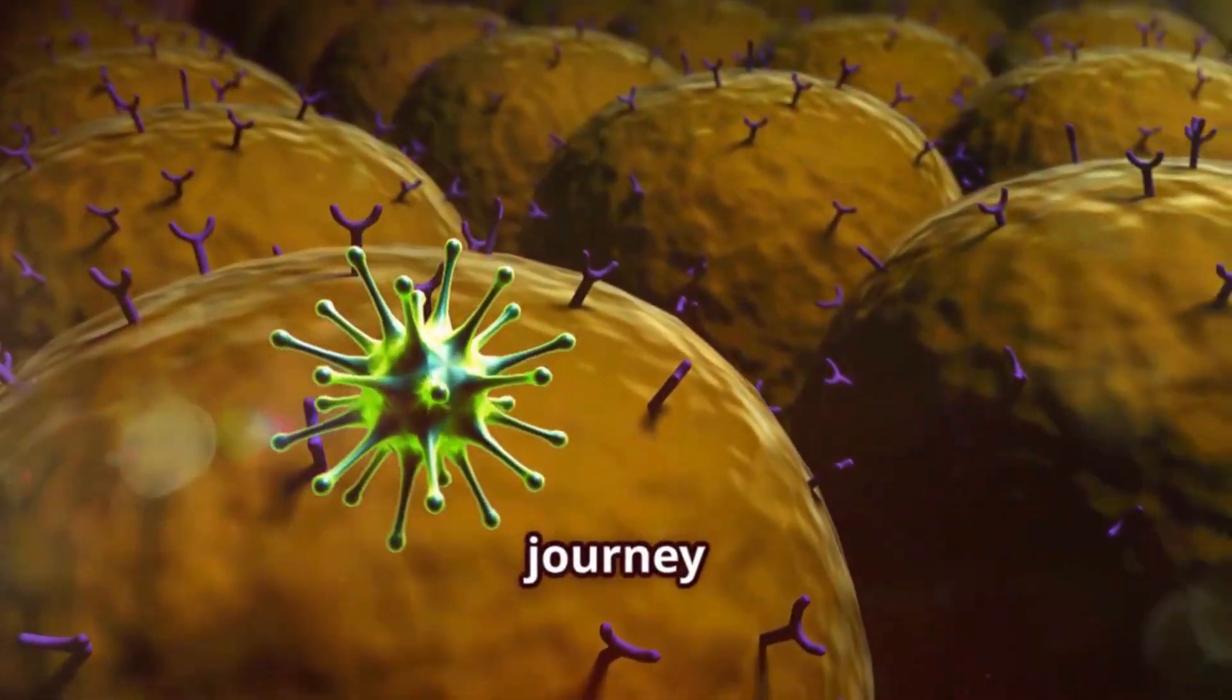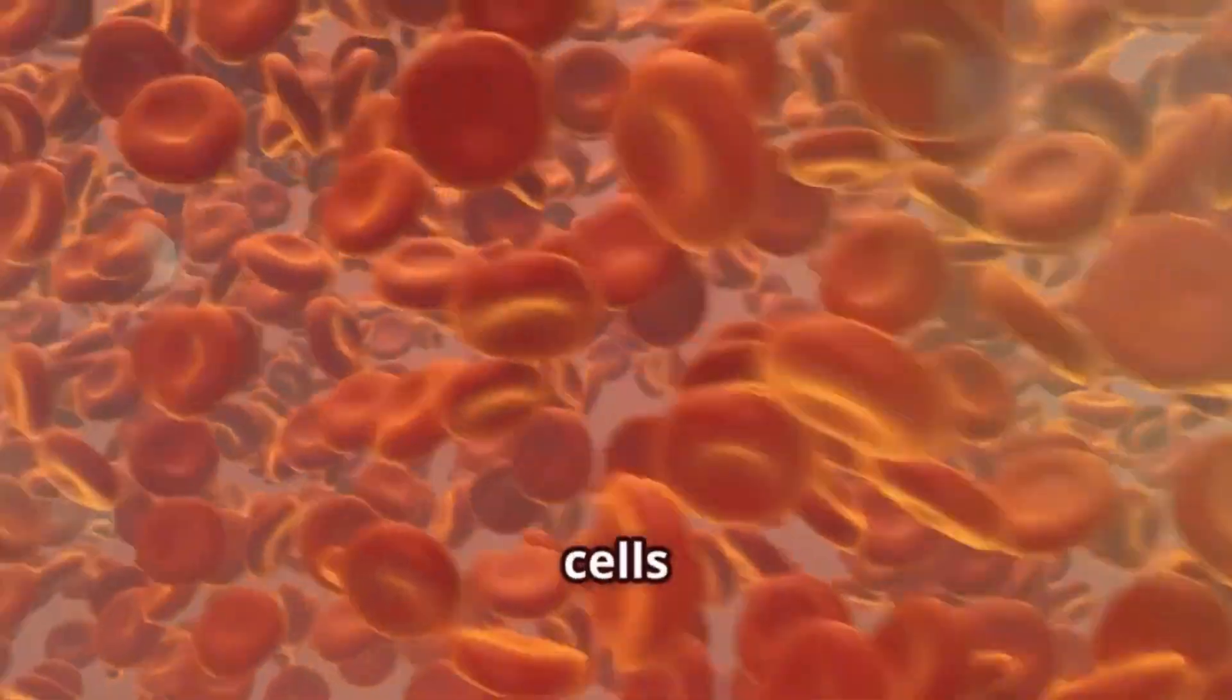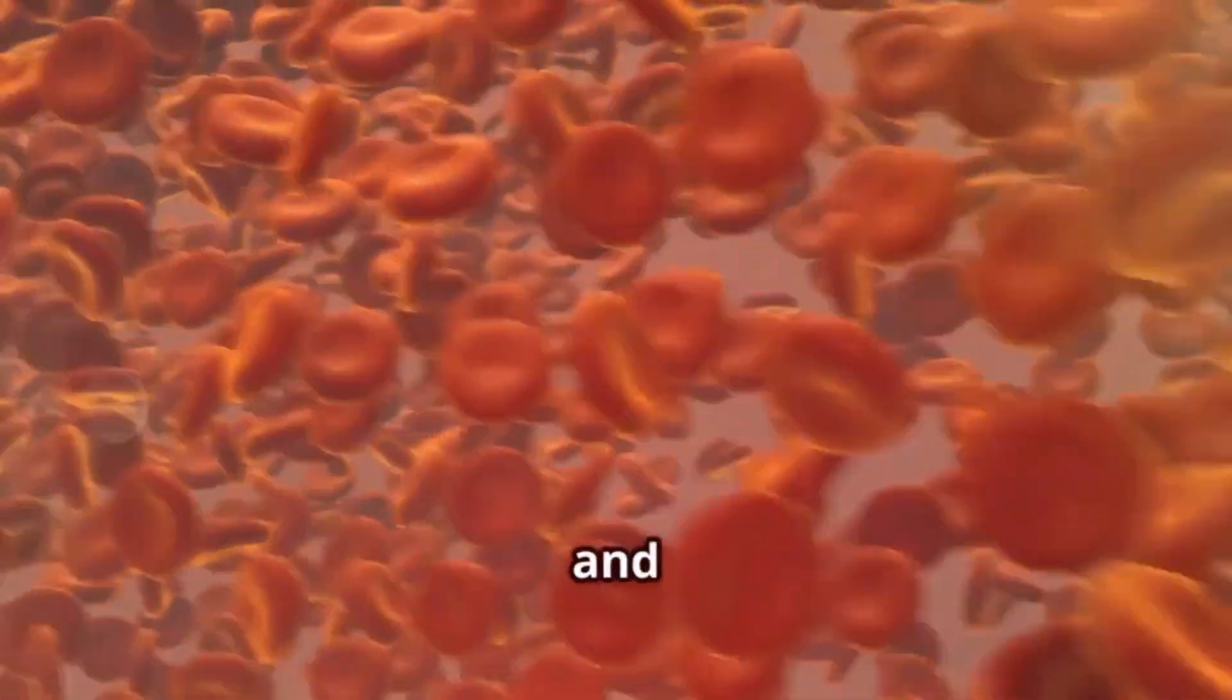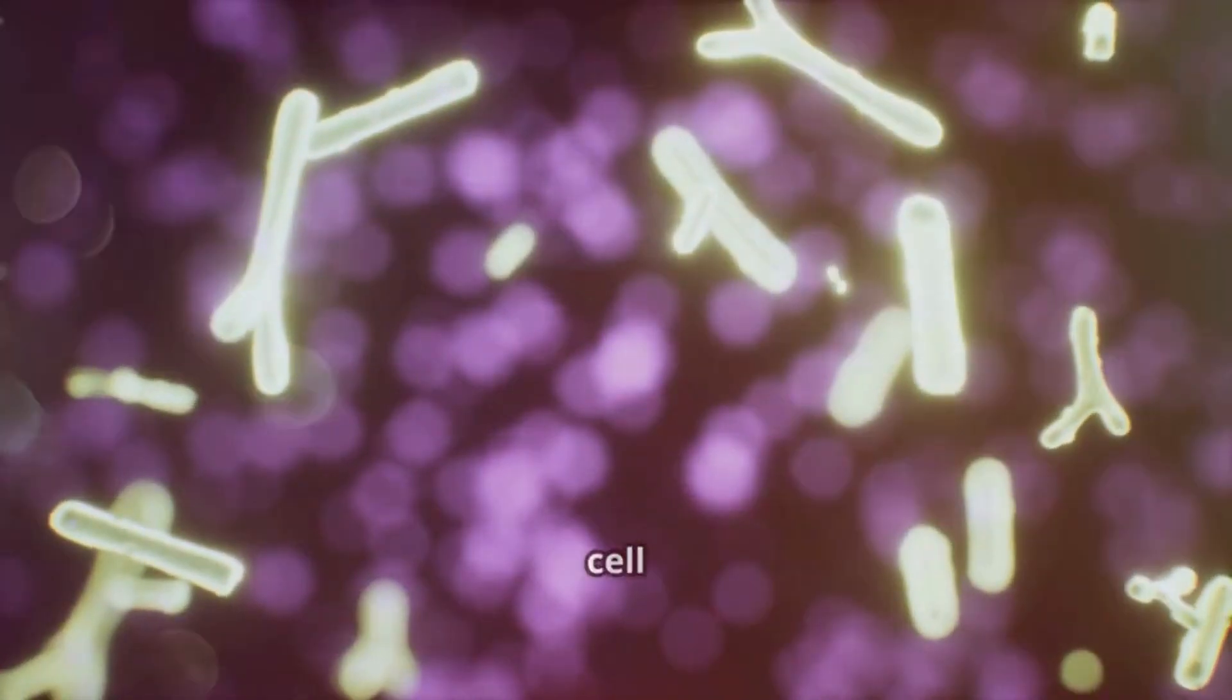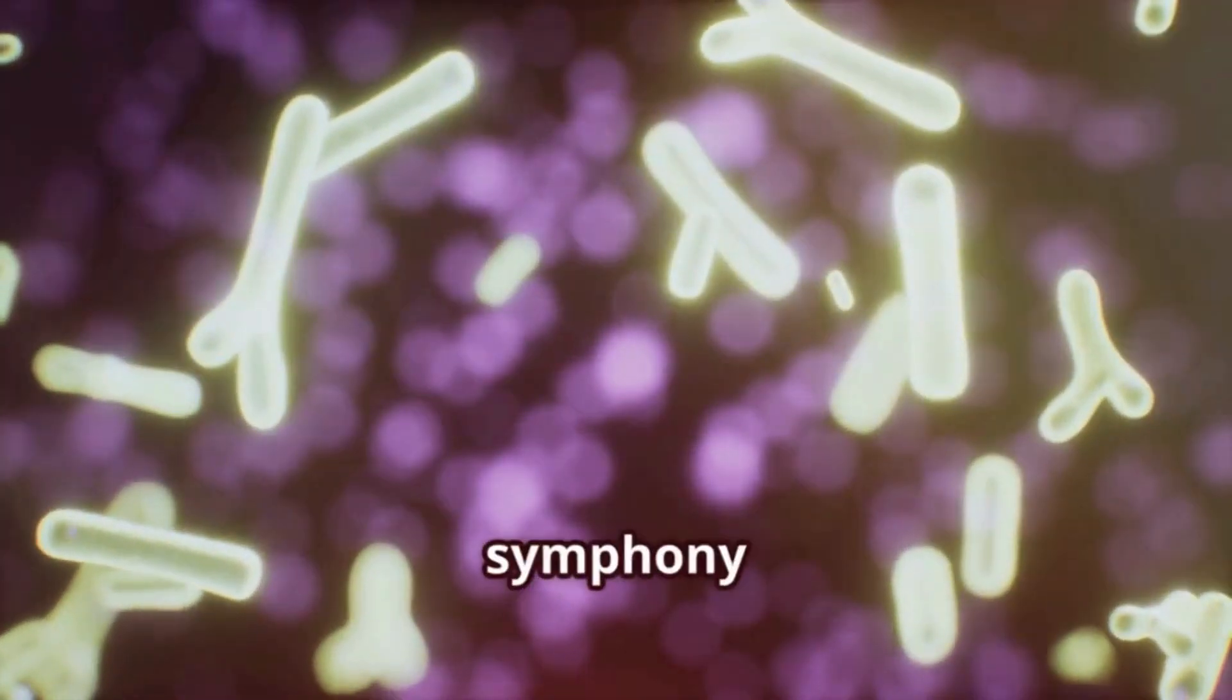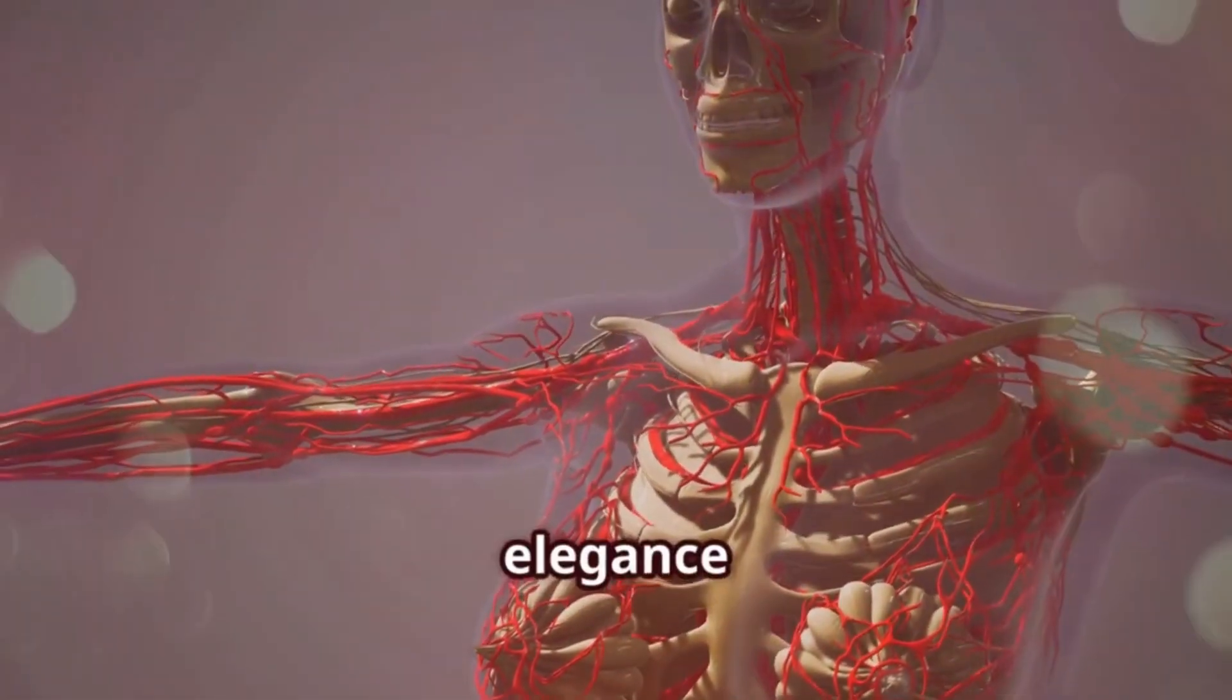Wow, what an incredible journey through the microscopic world of your body! We've seen how specialized cells work tirelessly to keep us alive and functioning. From the speedy sperm cell to the protective skin cells, each cell type plays a crucial role in the symphony of life. It's truly mind-boggling to think about the sheer complexity and elegance of the human body, all made possible by the coordinated efforts of trillions of tiny cells.